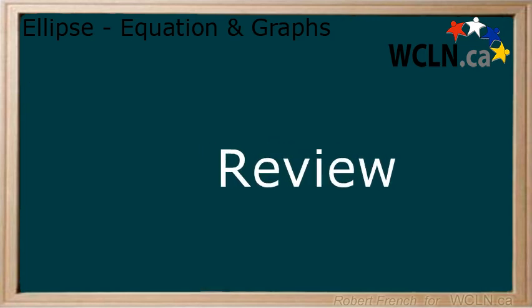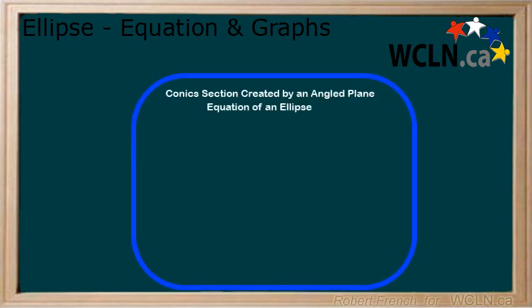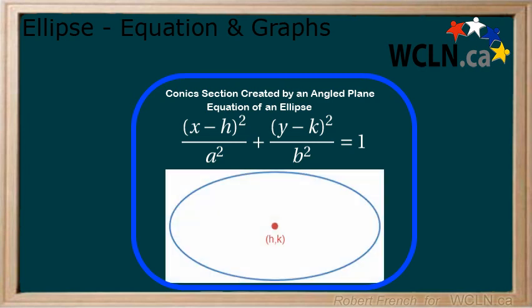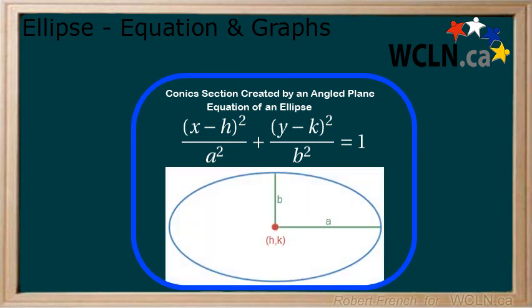In this lesson, you learned about the equation and graphs of the conic section generated by a plane at an angle to the axis, also known as an ellipse. The equation can be written where the origin of the ellipse is at h,k and the horizontal and vertical distances from the origin to the edge of the ellipse are represented by a and b. The ellipse can also be graphed using this information.